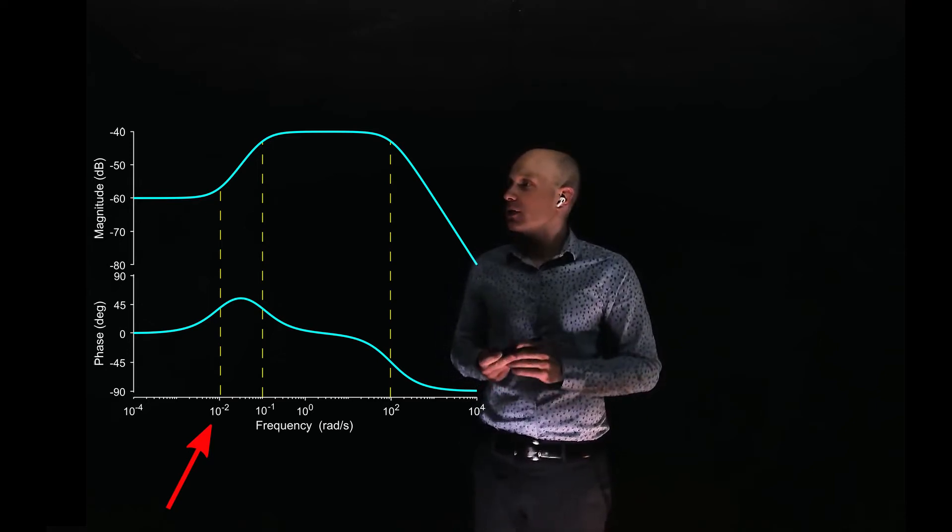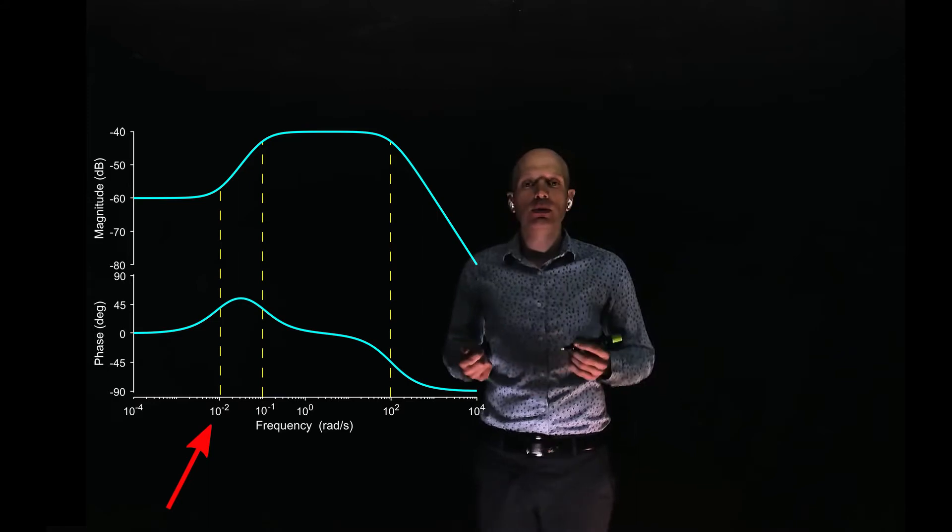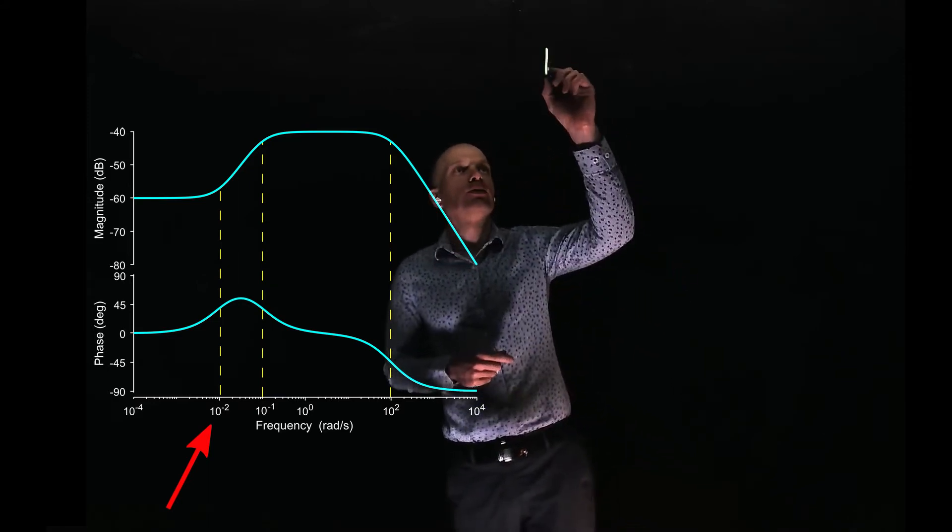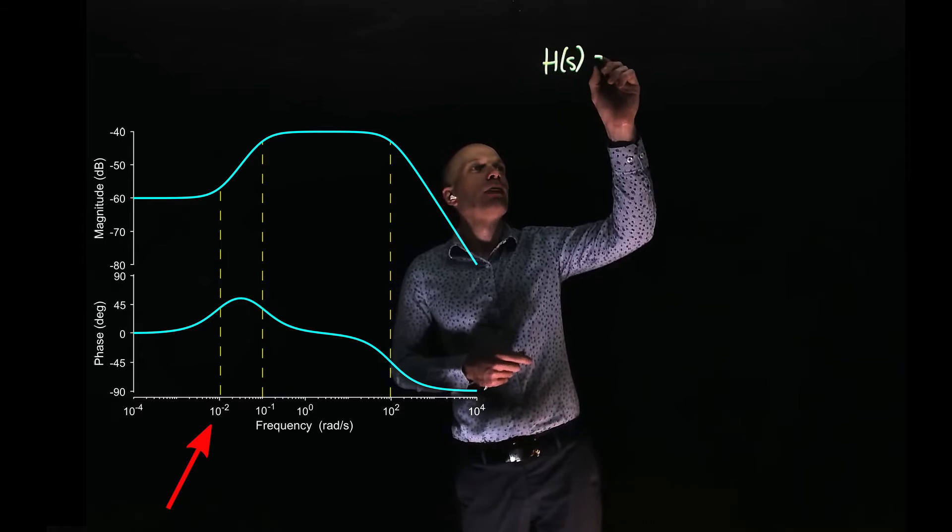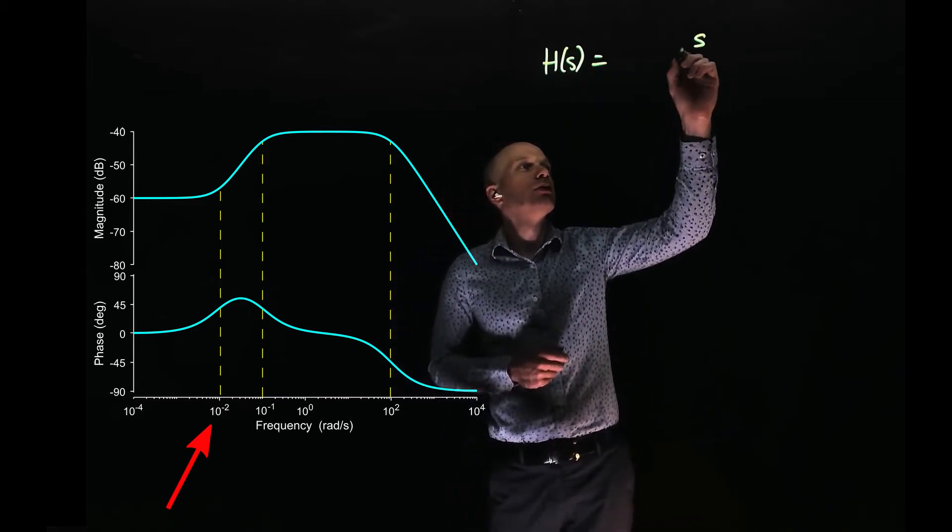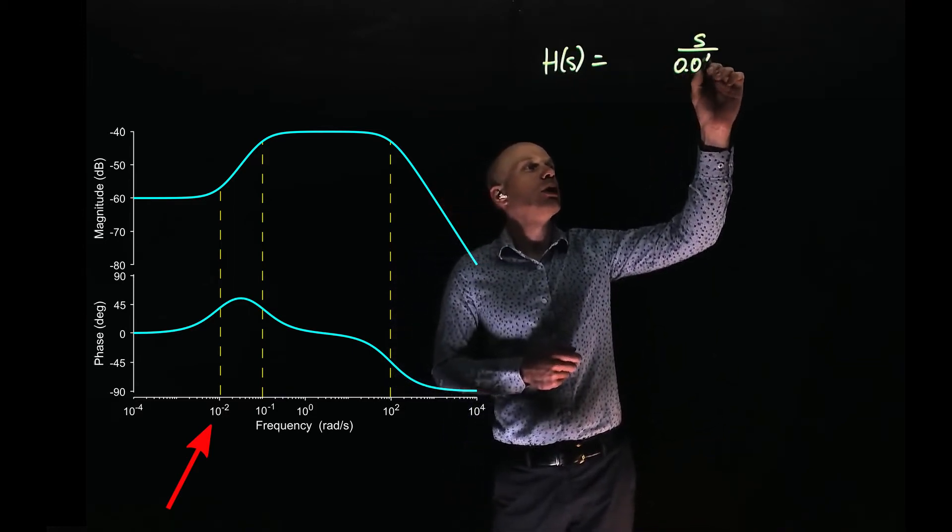The zero has a frequency of 0.01 radians per second. Now we can attempt to draft our transfer function as having a zero at 0.01 radians per second.